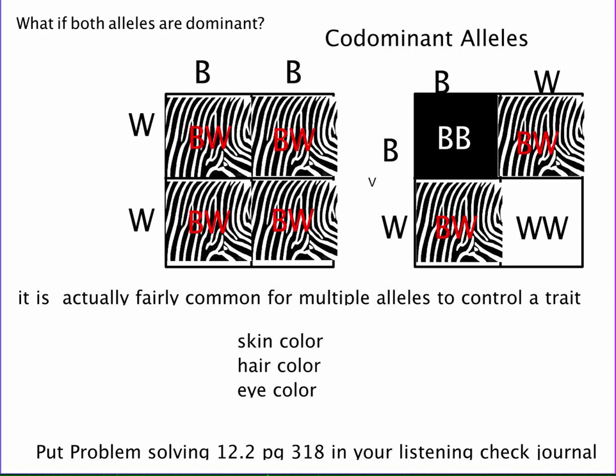It is actually fairly common for multiple alleles to control a trait. When we're looking at skin color, hair color, and eye color, we're going to have multiple alleles involved. In your listening check journal, you're going to have to do problem solving 12.2 from page 318 in your book.